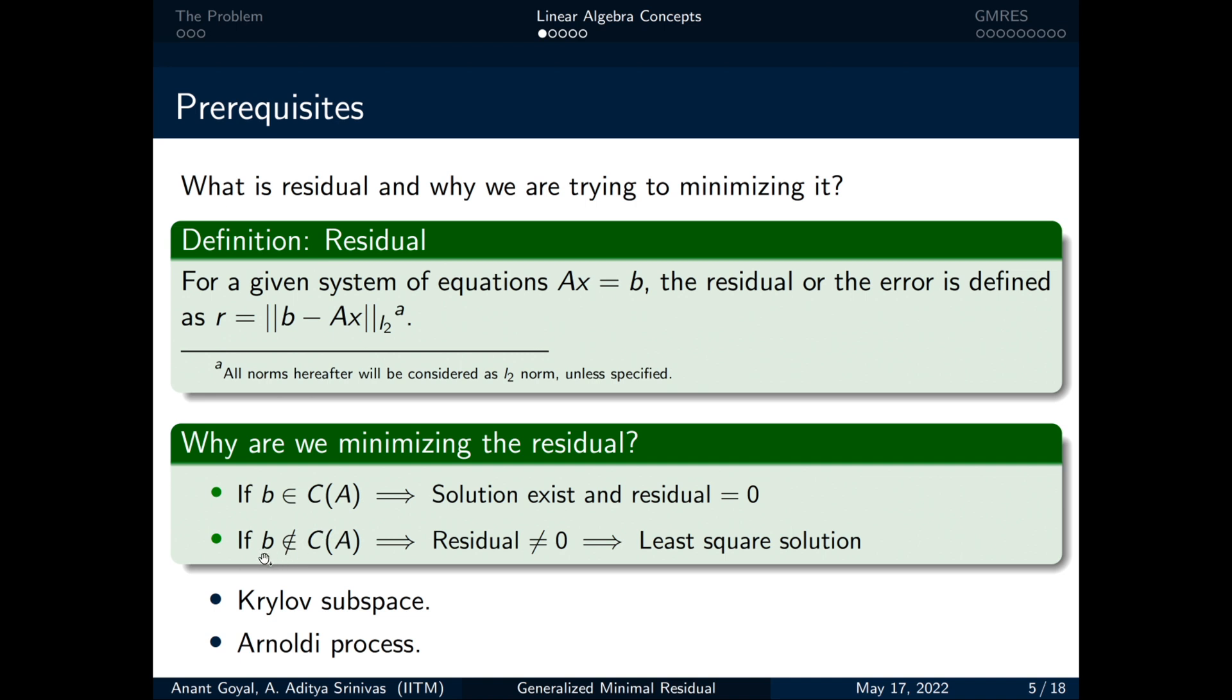In the second case, b does not belong to the column space of A. There is no solution here and we have to find the closest possible solution. For this to happen, the residue must be minimized which gives us a least square error solution.